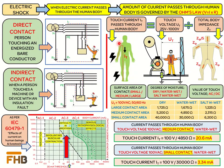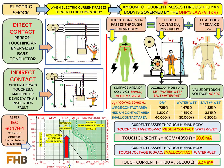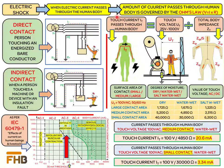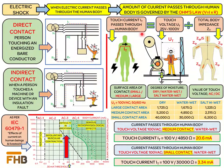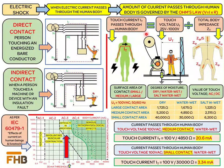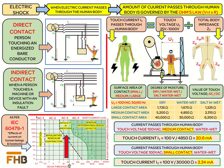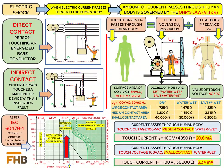The electric current passing through the human body is governed by Ohm's law: voltage equals current times resistance. Our target is to find the magnitude of current passing through the human body, as the danger to a person subjected to an electric shock is mainly dependent on the magnitude and duration of the current flow. For a human body subjected to an electric shock, the voltage is called the touch voltage, which is the voltage between the body part touching the energized object and the part touching the ground, as shown in the picture.